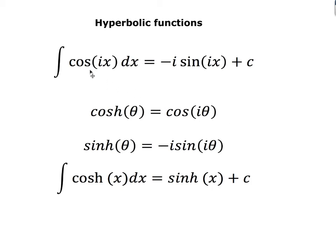As an aside: the integral of cos(ix) equals minus i·sin(ix) plus c. Hyperbolic cosine is defined as cos(iθ) and hyperbolic sine is defined as minus i·sin(iθ). So this result tells us that the integral of hyperbolic cosine equals hyperbolic sine, which is exactly the expected hyperbolic function identity.